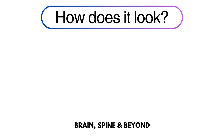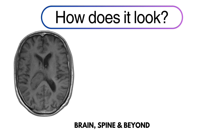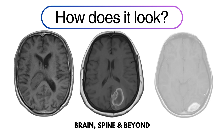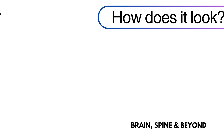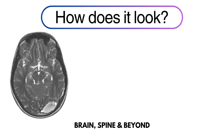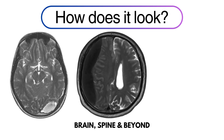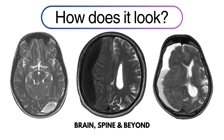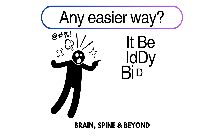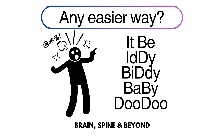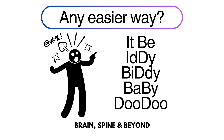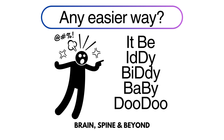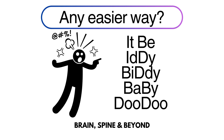Blood on MRI scans can be very confusing. On T1 imaging, sometimes it can be hypo-intense, iso-intense, or hyper-intense. When we get to T2-weighted imaging, life doesn't get easier — you can see high-intense signals, low-intense signals, or sometimes mixed intensity. Some suggest using mnemonics, but these are always very difficult to remember. In this video, we will go through a simple way to remember these differences so you don't forget again.